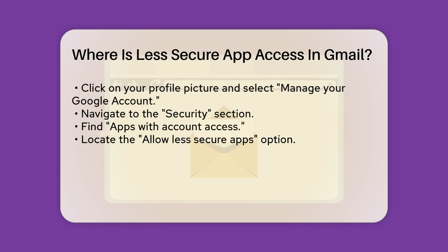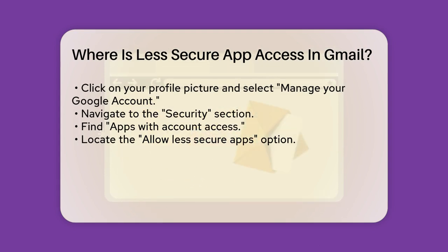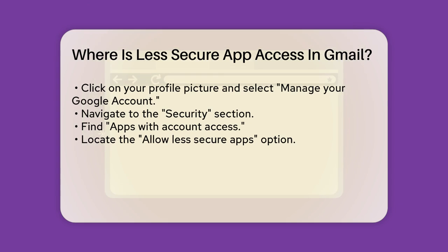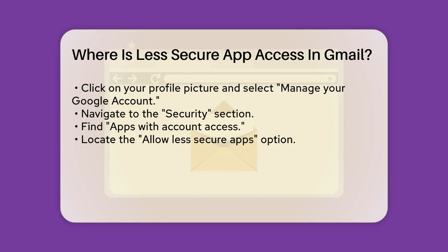Log in to your Gmail account. Go to the Google account settings by clicking on your profile picture in the top right corner and selecting Manage Your Google Account. Navigate to the Security option. Look for the Apps with Account Access section. Here, you'll find the option to allow less secure apps.